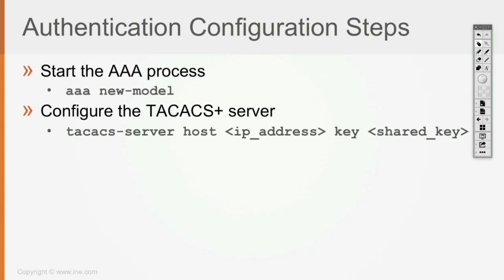It's called 'new model' because by default IOS uses the AAA old model, which means you cannot communicate with TACACS or RADIUS servers. With the built-in default model, you cannot speak with a TACACS server or a RADIUS server. So if you want to communicate for AAA scopes with a TACACS or RADIUS server, you have to say 'aaa new-model', which allows you to configure the TACACS server and a RADIUS server.